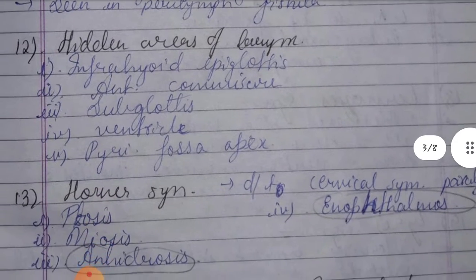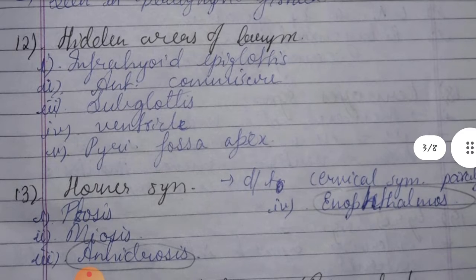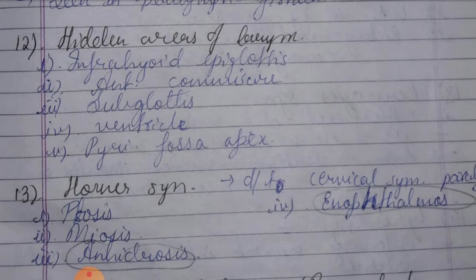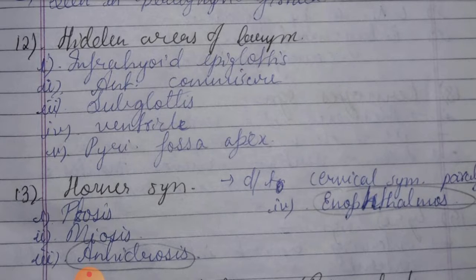Twelfth: four hidden areas of the larynx — 1. Infra epiglottis, 2. Anterior commissure, 3. Sub-glottis, 4. Ventricle, 5. Pyriform fossa apex.